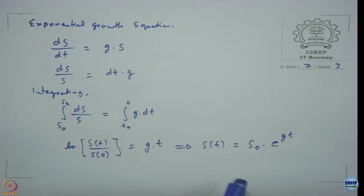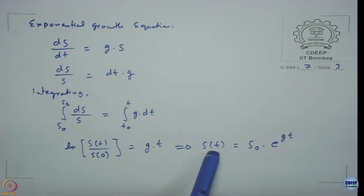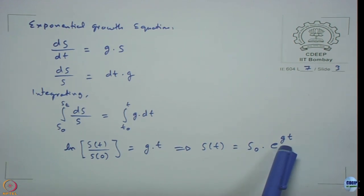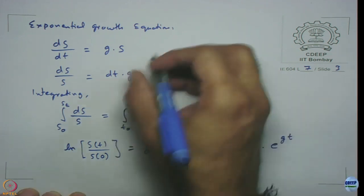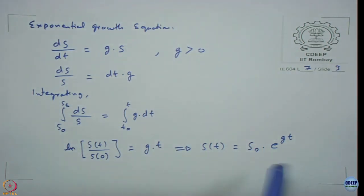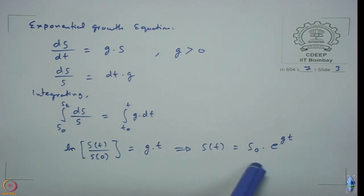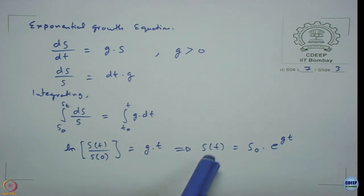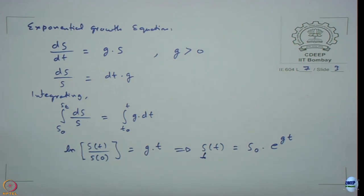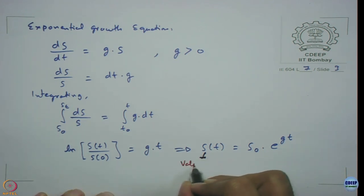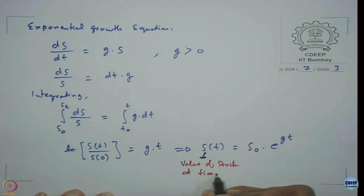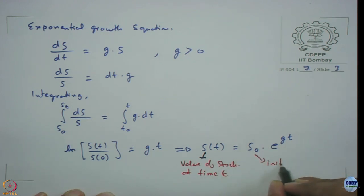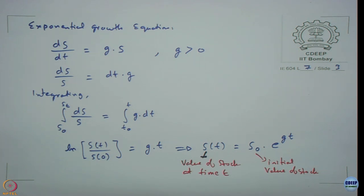So I raise it to the power exponential and move the denominator to the right side. I get stock at time t as nothing but the initial value of stock times e to the power gt. As you can see, if g is greater than 0, then the system is going to exhibit exponential growth. Given the initial value of stock and knowing g, I can directly compute the stock value at any time t.